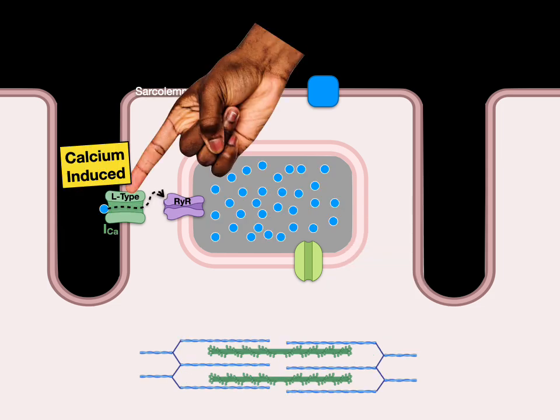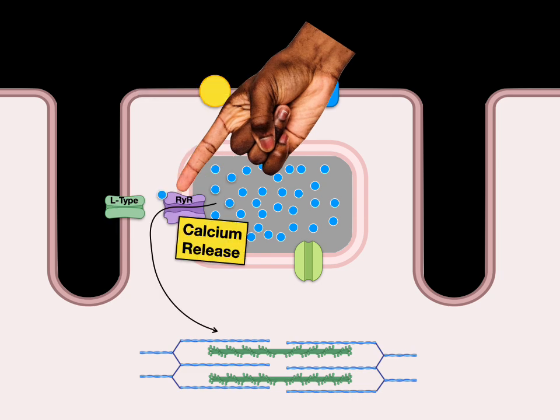The L-type calcium channel drives calcium-induced calcium release through the ryanodine receptor.